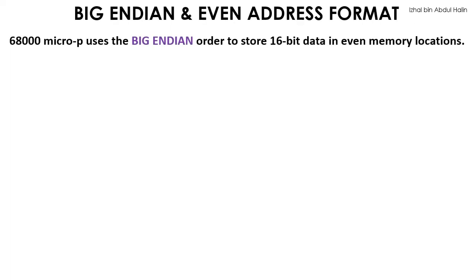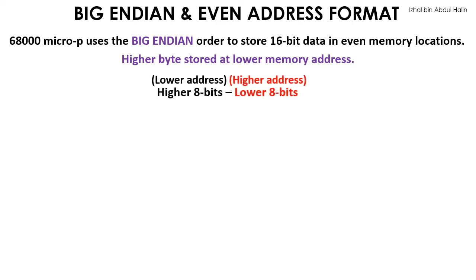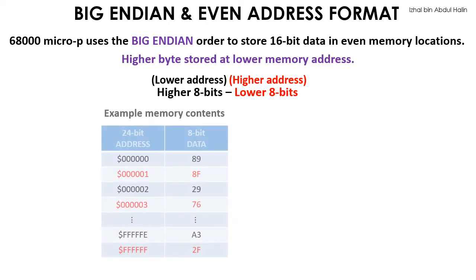Let us now see how memory contents in the 68K microprocessor are organized. The 68K uses Big Endian order for memory organization, which implies that higher bytes are stored at a lower memory address, and vice versa. We will look at an example to clarify this. The first column is for address while the second column shows data values, also in hex.